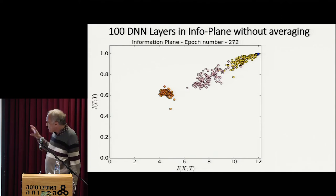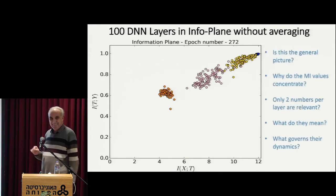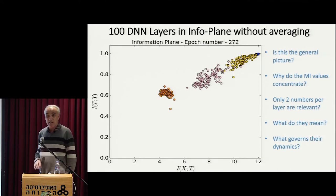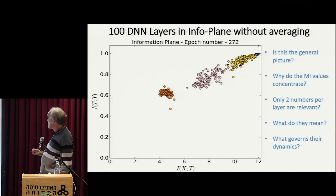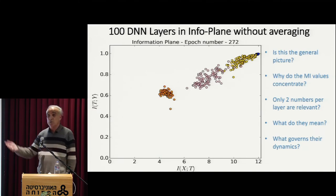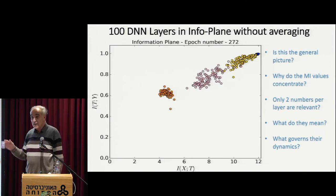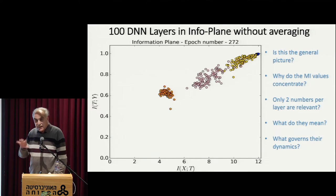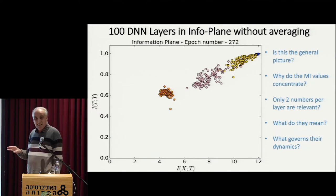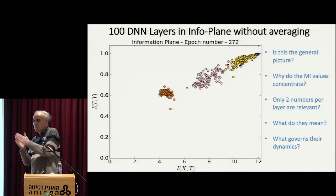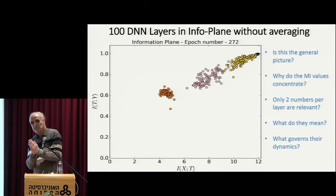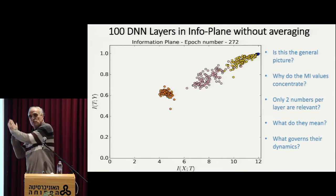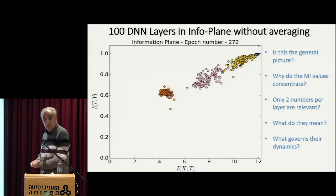I want to focus your attention to several interesting questions just by looking at this movie. First of all, is this the general picture? I argue yes, it is — unless you tweak and do things that are not standard, you can force the layers to converge to the same points or sometimes force them to move to the left. But in general, we see something like this.